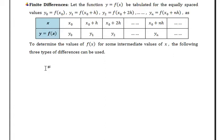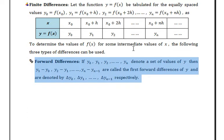In this video we discuss finite differences. For that, let's take the function y = f(x) tabulated for equally spaced values. To determine the values of f(x) for some intermediate values of x, the following three types of differences can be used. The first one is forward differences.